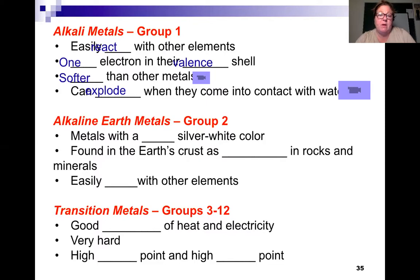Group 2, alkaline earth metals, are metals with a shiny silvery color, silver-white color. They're found in the earth's crust as compounds in rocks and minerals, and they easily react with other elements. Transition metals are good conductors. This is where we get copper and other conductors that we use in all of our appliances and electronics and our heating and air, our wiring in our homes. They are very hard. They have a high melting and a high boiling point.